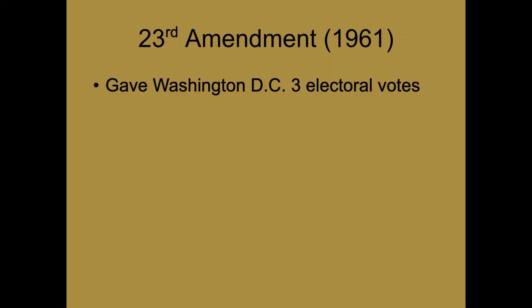The 23rd Amendment in 1961 gave Washington, D.C. three electoral votes. Previously, because Washington, D.C. was not a state, they didn't get any electoral votes. The population of Washington, D.C. was very similar to some smaller states like South Dakota, Wyoming, and Montana, and it just seemed wrong that those people couldn't vote for president.